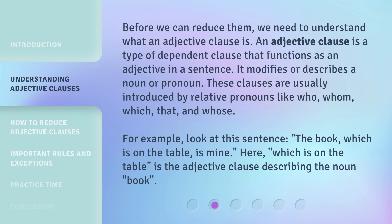Before we can reduce them, we need to understand what an adjective clause is. An adjective clause is a type of dependent clause that functions as an adjective in a sentence. It modifies or describes a noun or pronoun. These clauses are usually introduced by relative pronouns like who, whom, which, that, and whose.